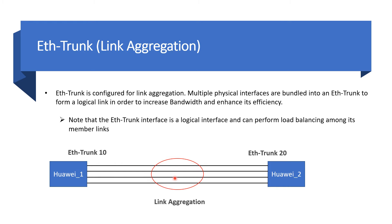In this diagram we have two devices, Huawei 1 and Huawei 2, with four links aggregated in the LAG which is called Ethernet trunk on Huawei. We have Ethernet trunk 10 on Huawei 1 with four physical links bound to it, and Ethernet trunk 20 on Huawei 2 with four physical links bound to it. In case any interface goes down, the rest can take over and perform load balancing for bandwidth efficiency.